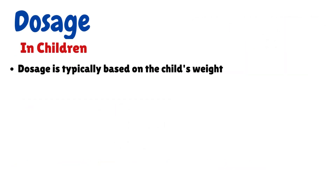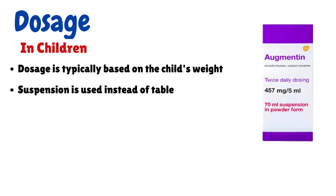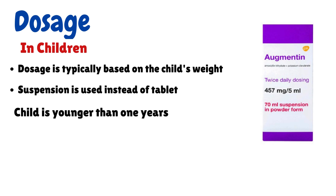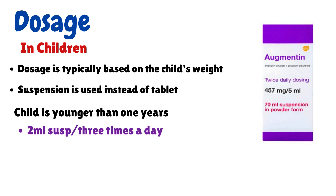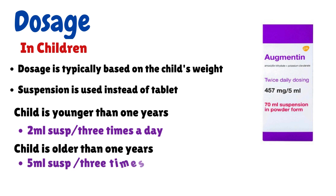In children, the dosage is typically based on the child's weight, and suspension is used instead of tablet. If your child is younger than 1 year, 2 ml suspension 3 times a day. If your child is older than 1 year, 5 ml suspension 3 times a day is given.